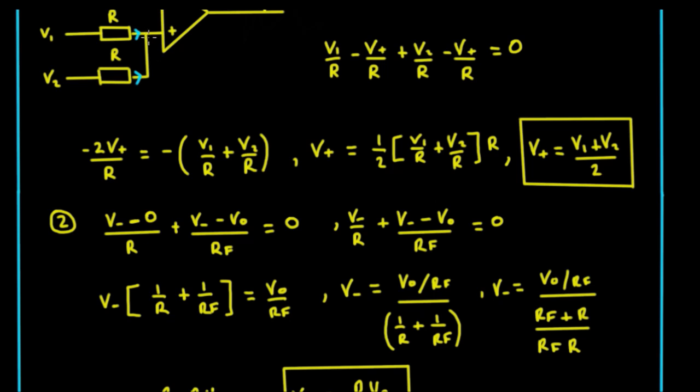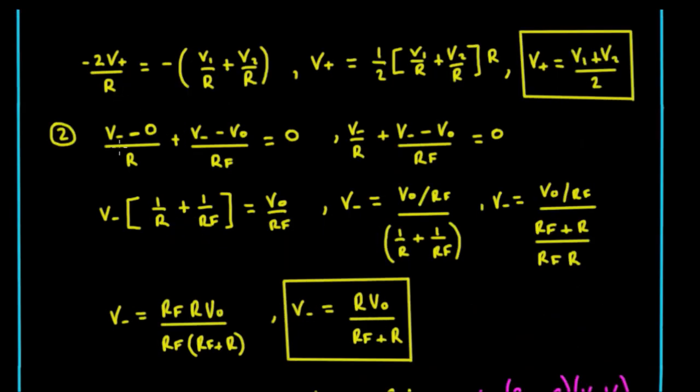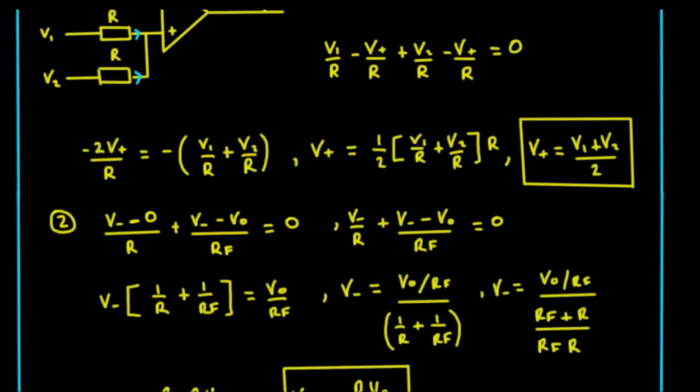So that's the first bit. We know what v_plus is now. Now we're going to find out what v_minus is. Again we can look at the current in this leg here. The current in this leg here is going to equal, starting with this one, it'll be v_minus minus zero.